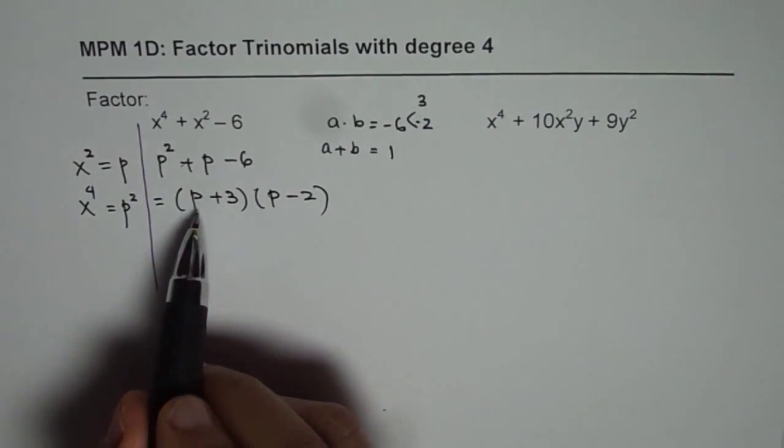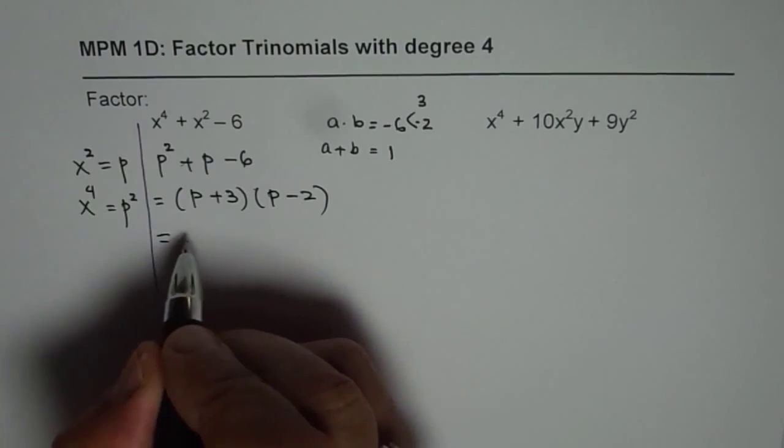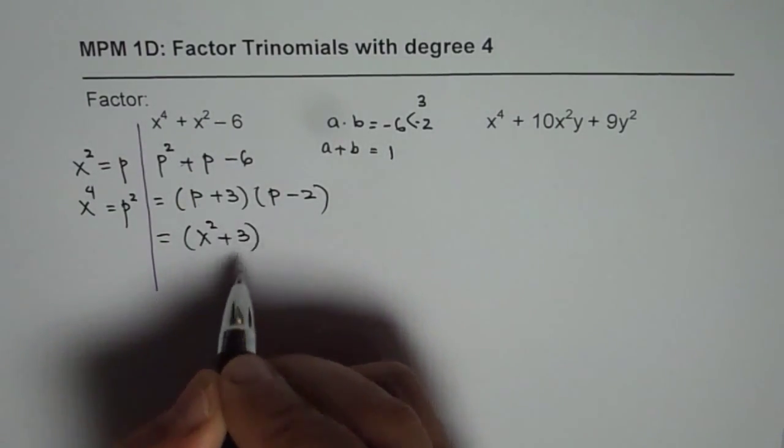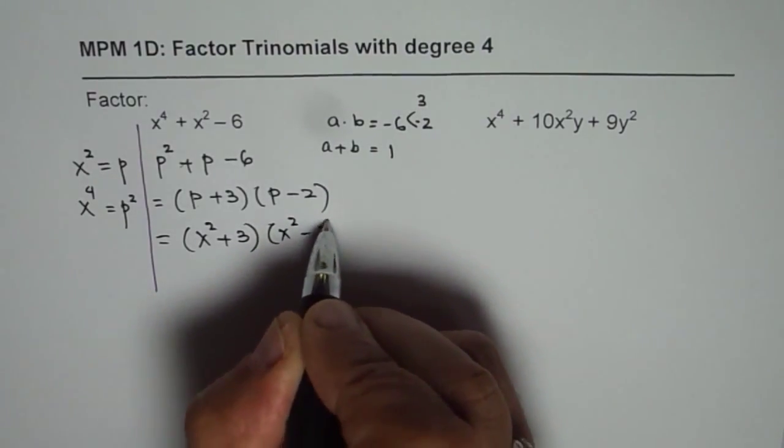Now what is p? p is x². So we will write x² back into the equation. So it is (x² + 3)(x² - 2).